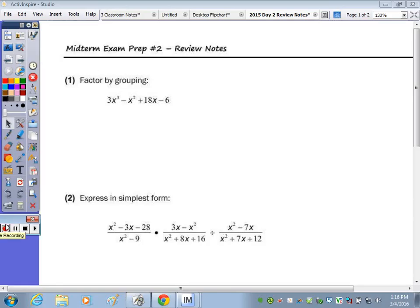At the top of the page, number one, when you go to factor by grouping, the first step is to group them. Group the first two terms, so you have the binomial 3x cubed minus x squared, and then you group the second or last two terms, so now you have the binomial 18x minus 6.